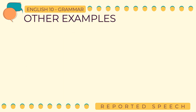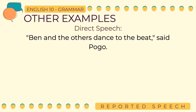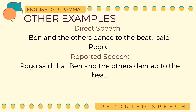Here's another example for direct and reported speech. Direct speech: 'Ben and the others dance to the beat,' said Pogo. When transforming this to reported speech, it will be: 'Pogo said that Ben and the others danced to the beat.' As you have observed, the reporting clause in the direct speech is placed at the end of the direct statement. Reporting clauses can be placed before or after the direct speech. But as for reported speech, the speaker and the introductory verb are placed at the beginning. Another change is the verb tense — simple present tense was used in the direct speech, then turned to simple past in the reported speech.